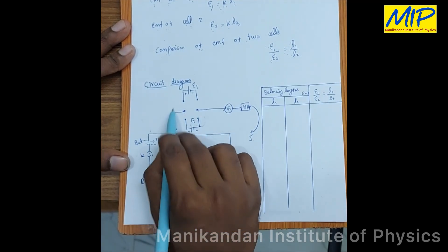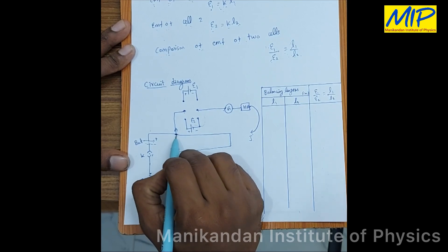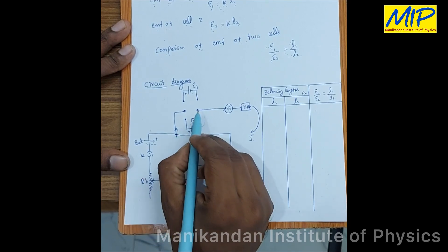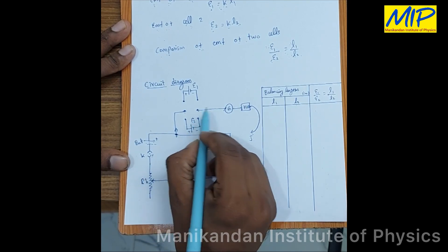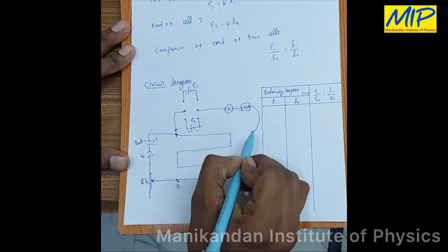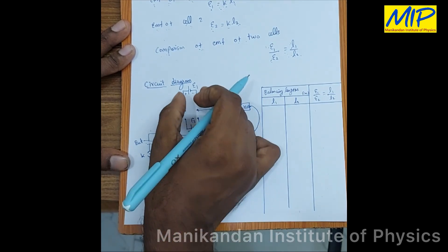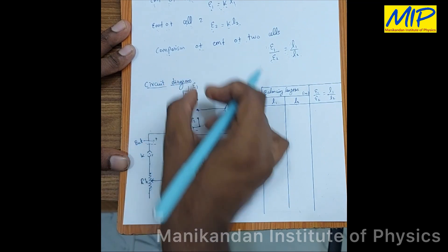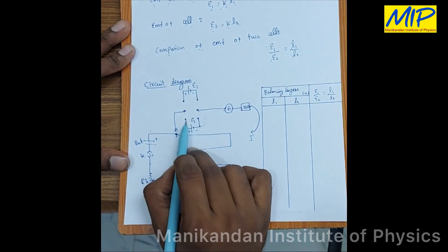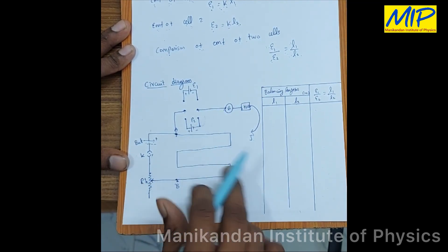This is the DPDT switch. From the middle end of the DPDT switch, I am going to connect with the potentiometer. From another end of the DPDT switch, I am going to connect with the galvanometer, high resistance, and the jockey. From the top end of the DPDT switch, I connect with E1, and from the bottom end of the DPDT switch, I connect with E2.